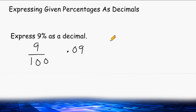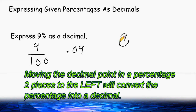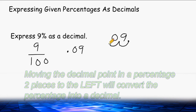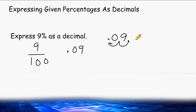Another method many people use to change percentages into decimals is to write a decimal at the end of the given percentage if there isn't one already, then move that decimal point two spaces to the left. So we move it one place and then write a zero, skipping two place values to the left. So 9% can be written as 0.09.